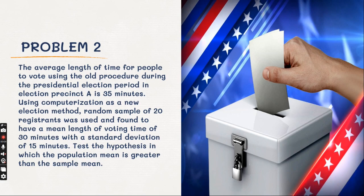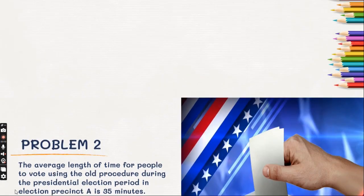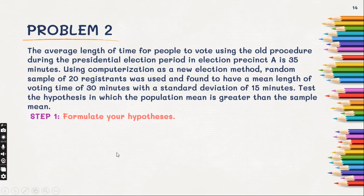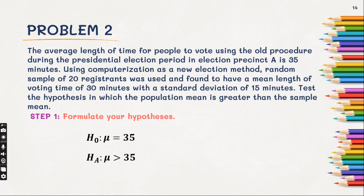Let us check if you got the correct answer. For step number one, formulate our hypothesis. The null hypothesis or H sub O is equal to 35. And then, based on our problem, there is a hint word which is 'greater.' So, we'll be using the greater than sign for our alternative hypothesis.